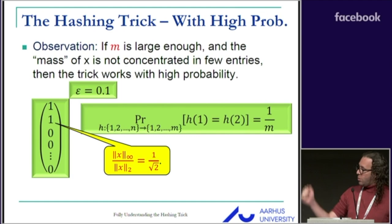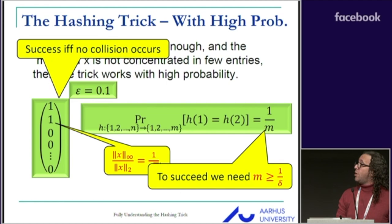In order to hash this vector and maintain its norm, we need these two entries not to collide. This happens with probability one over M, which means that in order to get good performance, we need M to be very large.